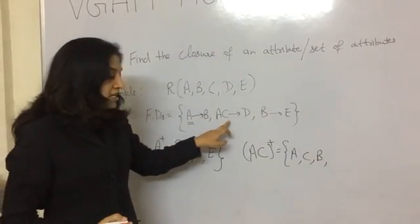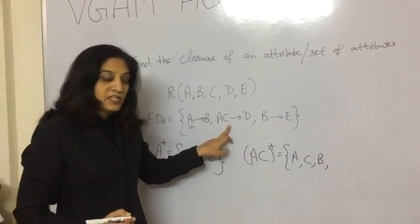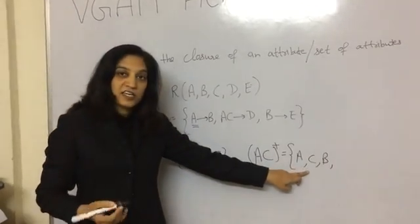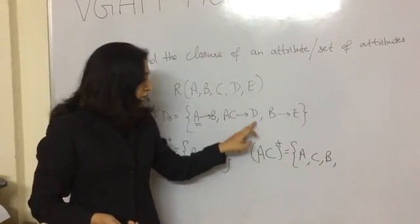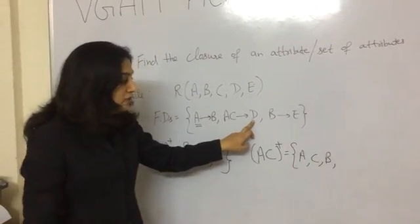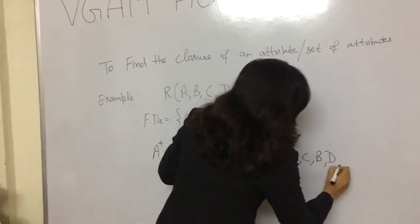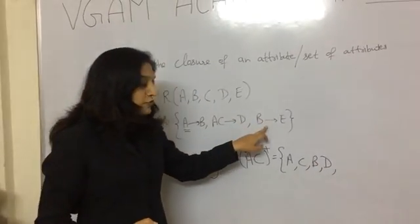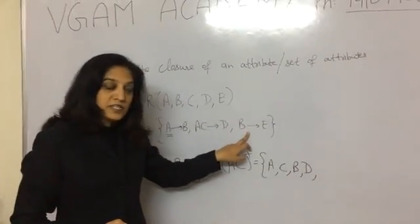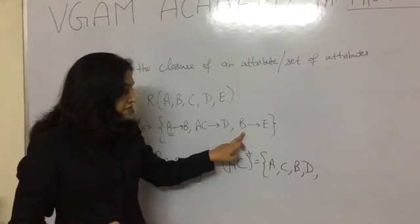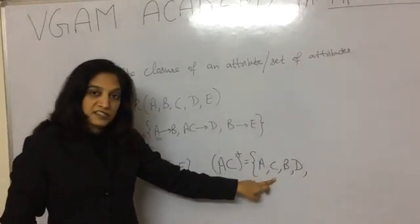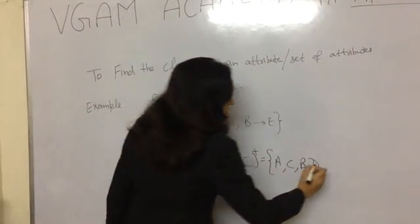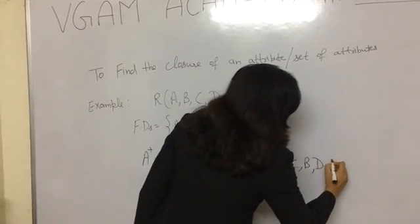We will put its right side, B, in the set. Moving to the next functional dependency, it contains A and C, and both A and C are in the set, so we will put D also in the set. Moving to the next functional dependency, B is on the left side and it is in the set, so we will put its right side E also in the set.